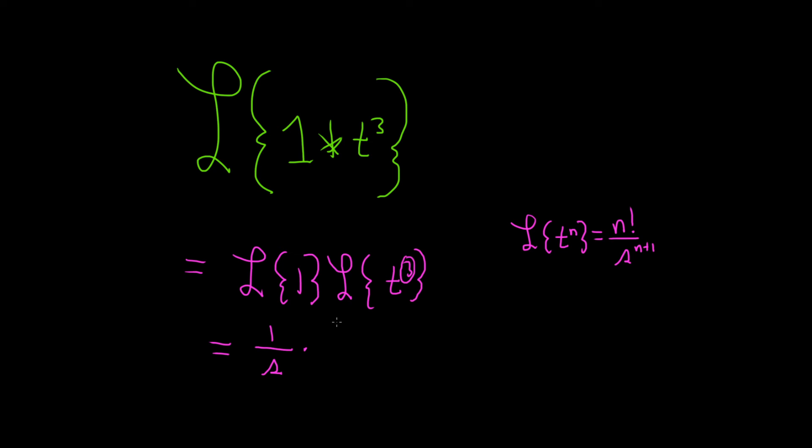So here n is 3, so it will be 3 factorial over s, and it's always 1 higher, so 3 plus 1 is 4.